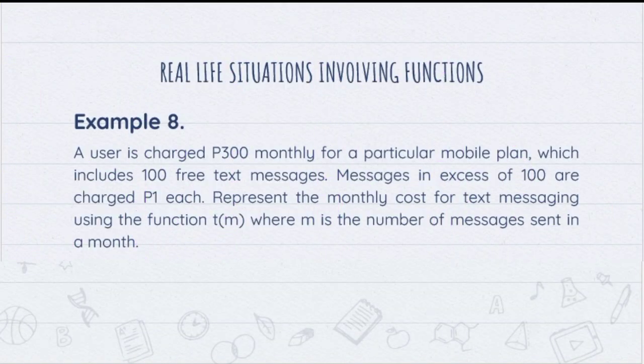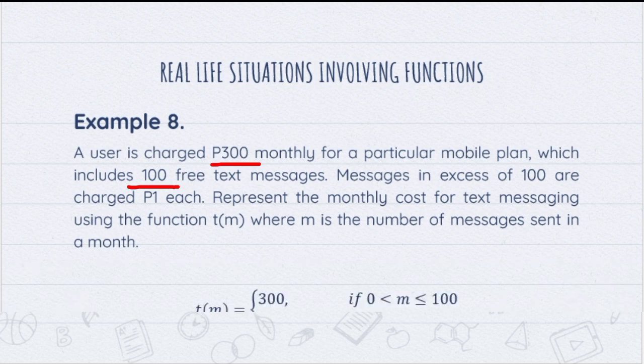Example A: A user is charged 300 pesos monthly for a particular mobile plan, which includes 100 free text messages. Messages in excess of 100 are charged 1 peso each. Represent the monthly cost for text messaging using the function T of M, where M is the number of messages sent in a month. For the first sentence — 300 pesos with 100 free text messages — our first function is T of M equals 300 for M less than or equal to 100.